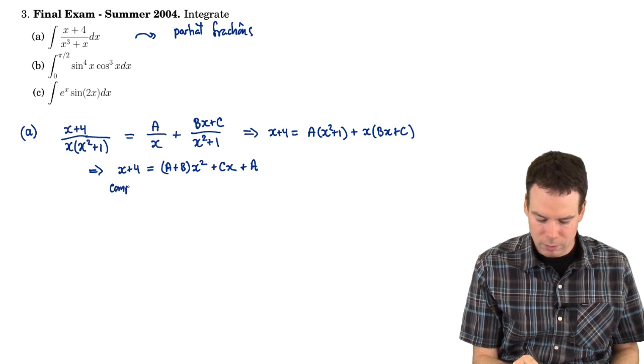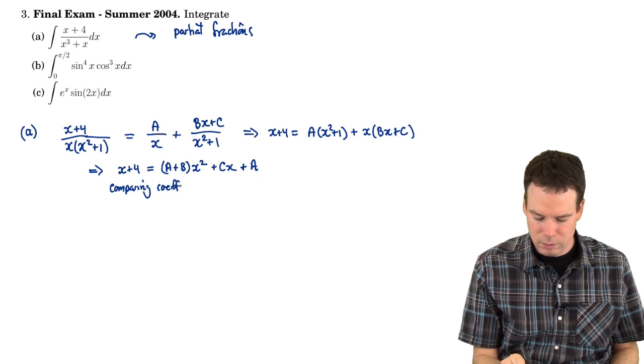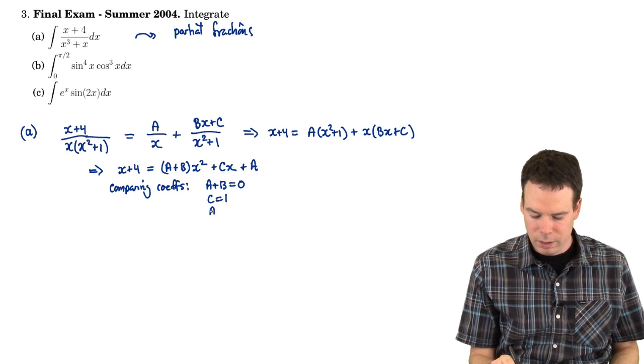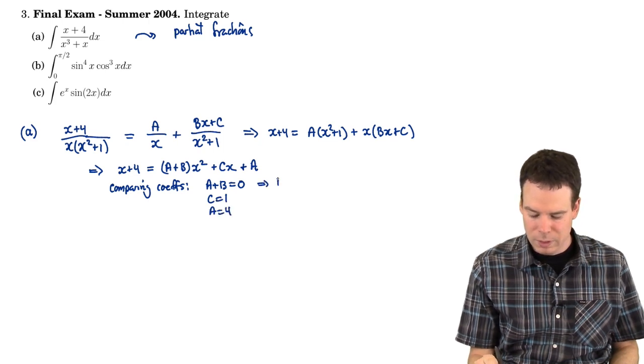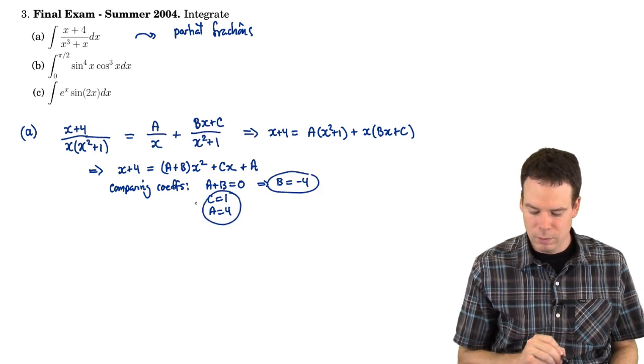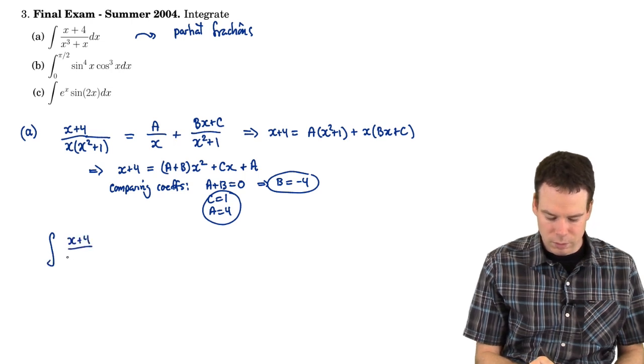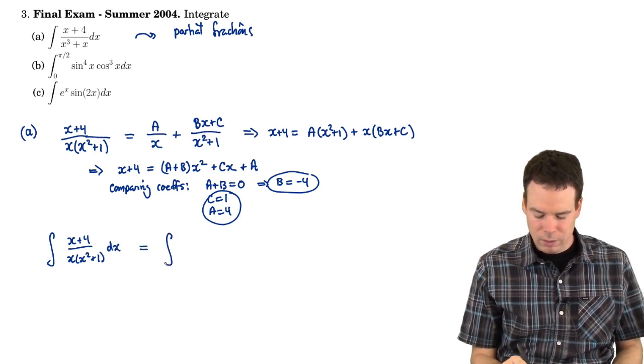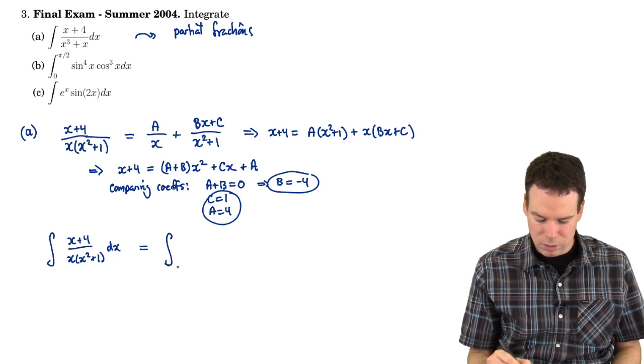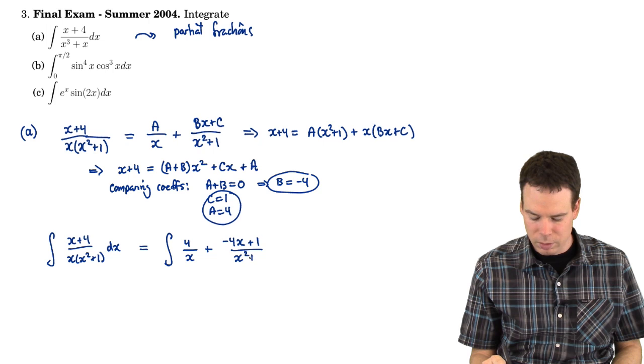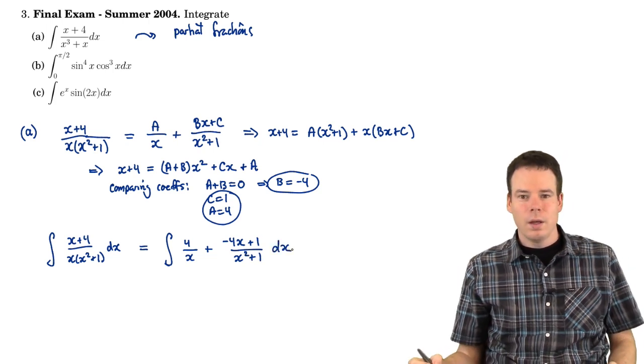So by comparing coefficients, we see that a plus b has to be 0, c has to be 1, and a has to be 4. Well, if a is 4, then b has to be negative 4. And so we've ended up finding our values of a, b, and c. So our original integral, which is x plus 4 all over x times x squared plus 1 dx. The integrand can be rewritten using this partial fraction decomposition. And so that's 4 over x plus negative 4x plus 1 all over x squared plus 1 dx. And now we can go to work on this.